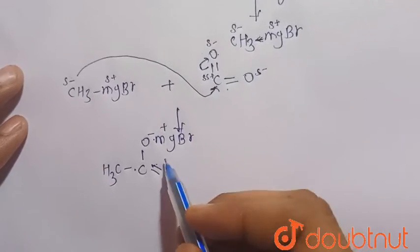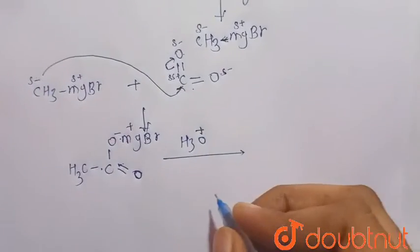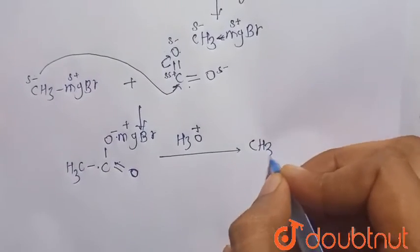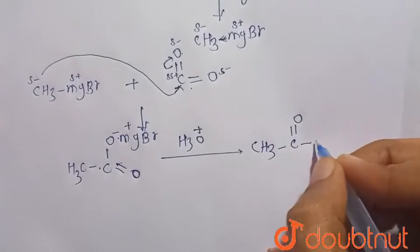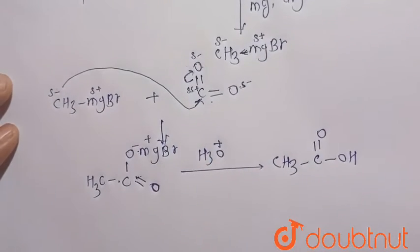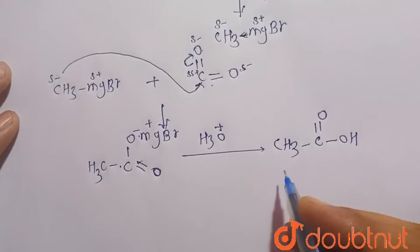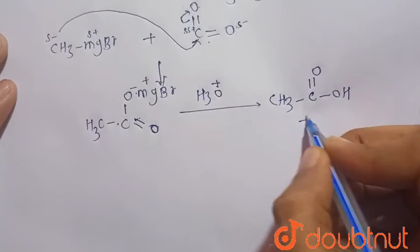Now when it is hydrolyzed, that is with H3O positive, so there is a formation of CH3-C=O-OH. That is, this O minus will take H plus from the H3O positive. So there is the formation of acetic acid or ethanoic acid, which is our desired product.